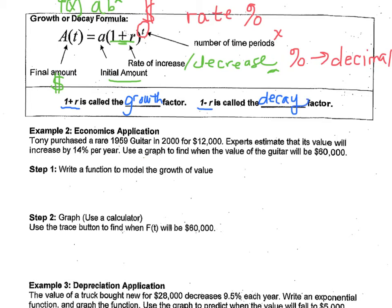Let's use that information to write our own function in example 2. Tony purchased a rare guitar from 1959 in the year 2000 for $12,000. Now they say that that value is going to increase 14% a year. We're going to use a graph to find when the guitar will be worth $60,000. Well, in order to graph it, we have to write a function. A(t), the amount of money the guitar is worth over time. We need how much the guitar was initially worth. Well, at the beginning, the investment was $12,000. So that's our number for a.